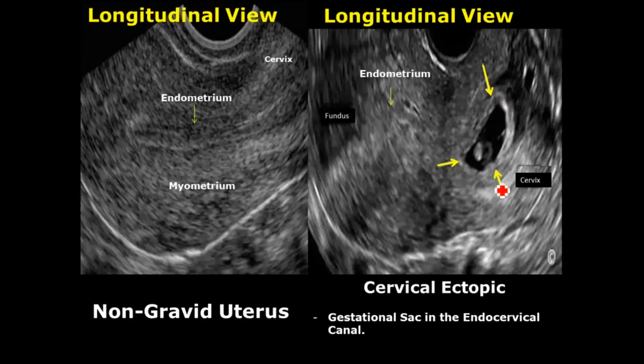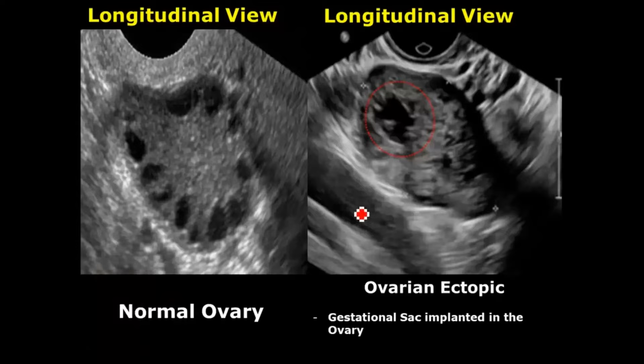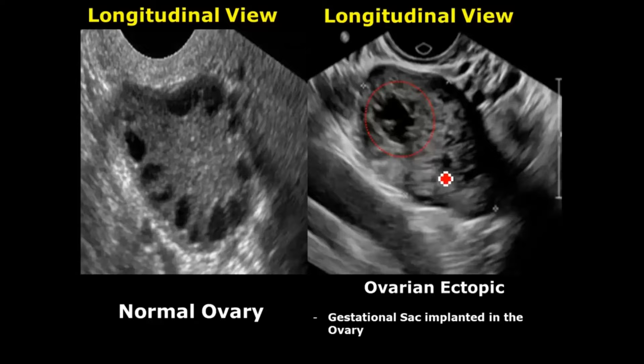Cervical ectopic is a rare form of ectopic pregnancy in which there is a gestational sac in the endocervical canal. Normally the pregnancy should be located in the endometrial canal implanted inside the endometrium. An ovarian ectopic is another rare form in which the gestational sac will be located inside the ovary — here we can notice a gestational sac with a small embryo located within the ovary.